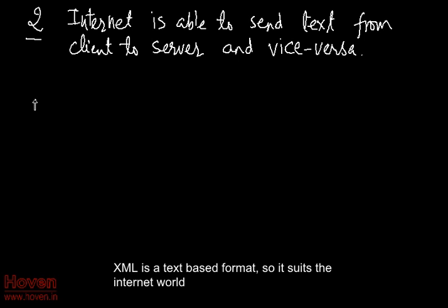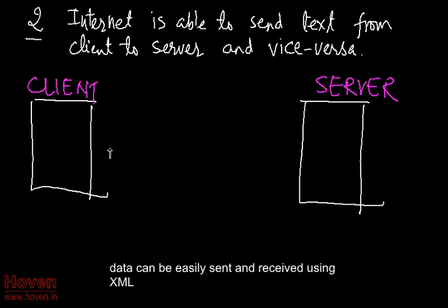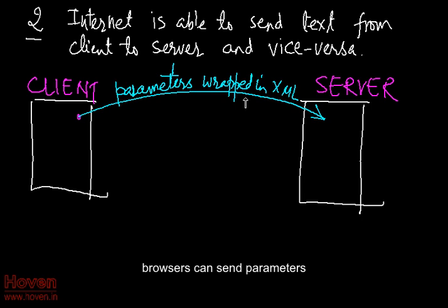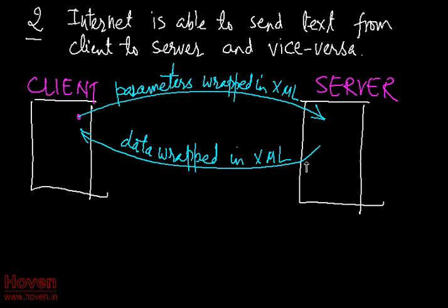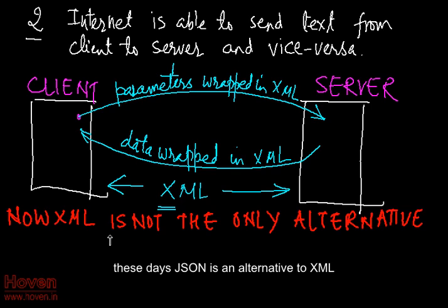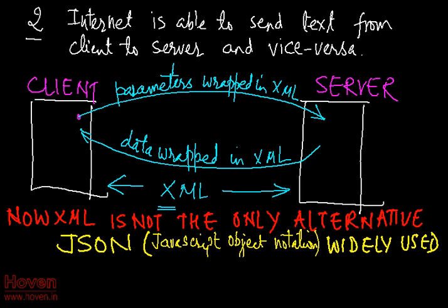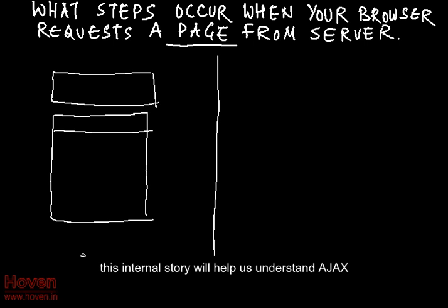XML is a text-based format, so it suits the internet world. Data can be easily sent and received using XML. Browsers can send parameters, and servers can respond back in XML. XML facilitates two-way communication. These days JSON is an alternative to XML. This internal story will help us understand Ajax.